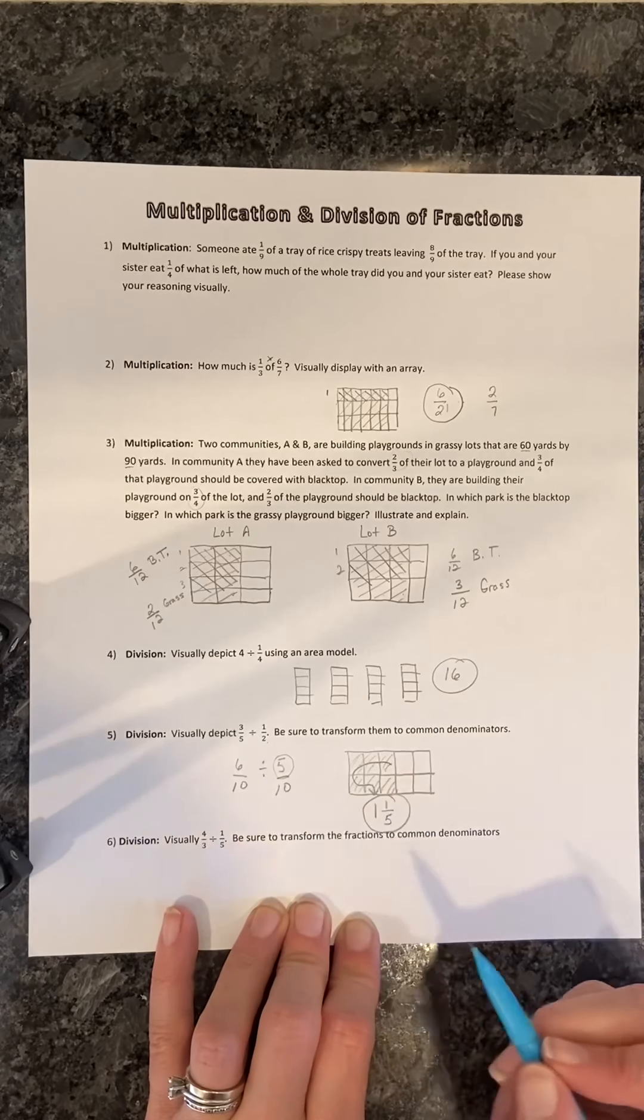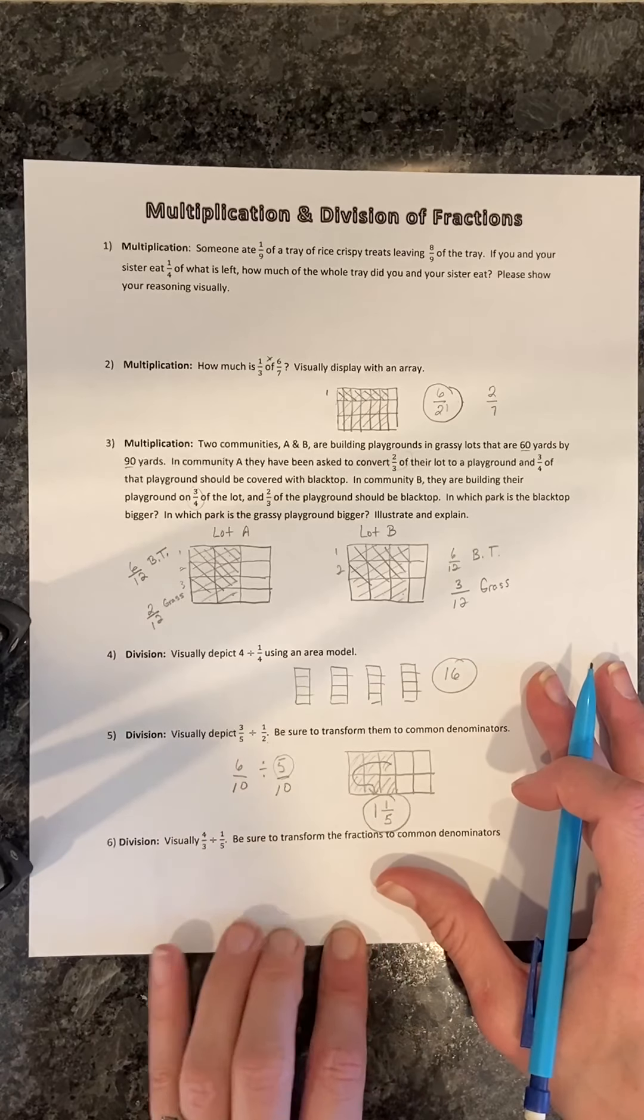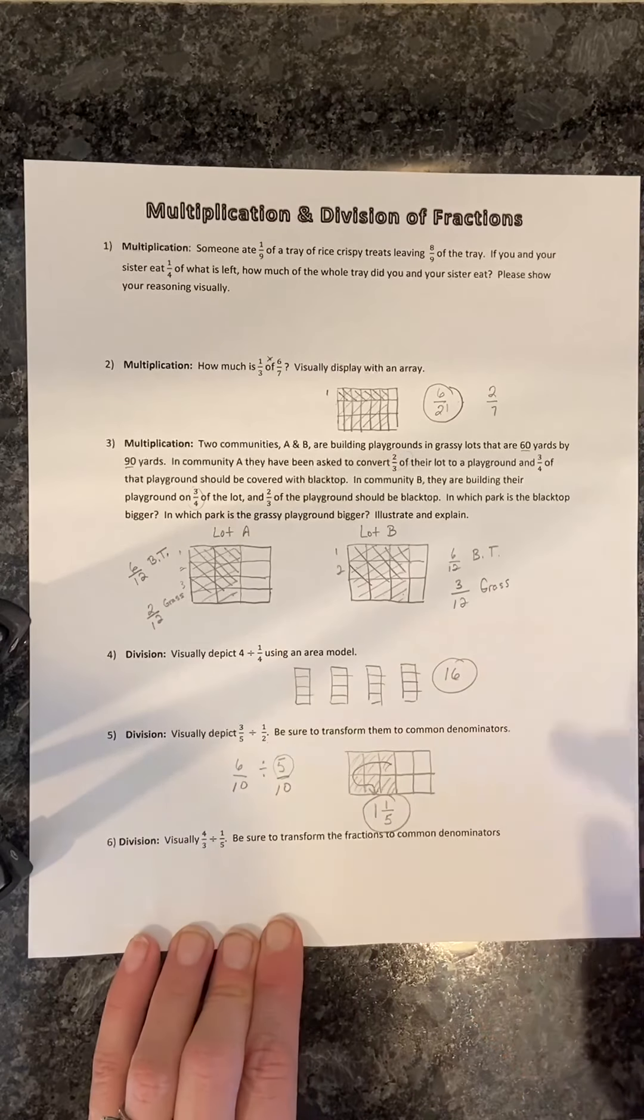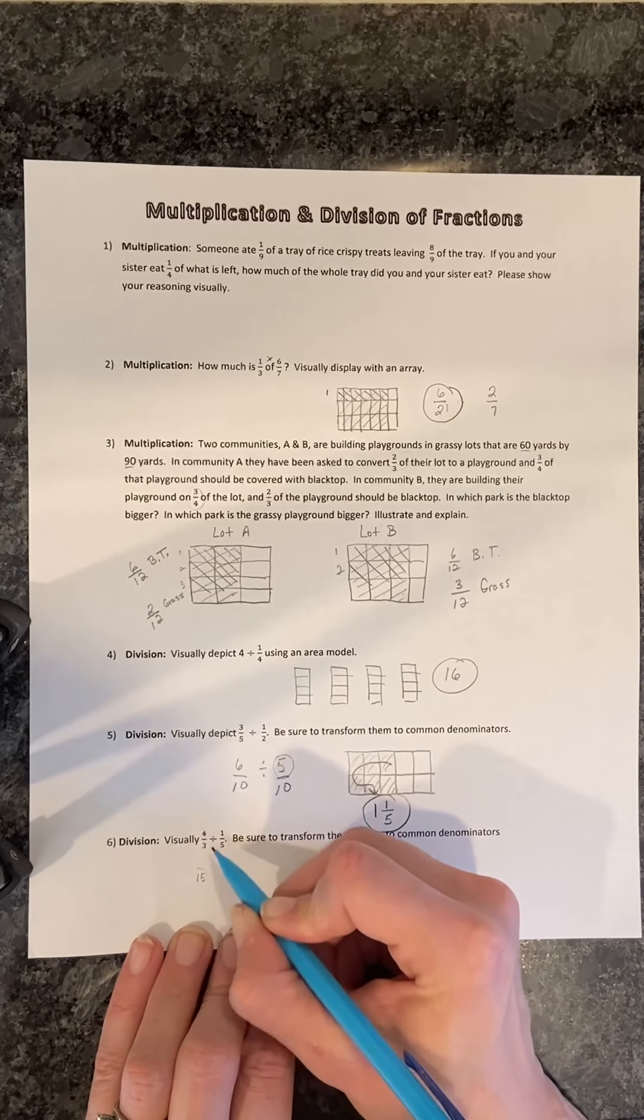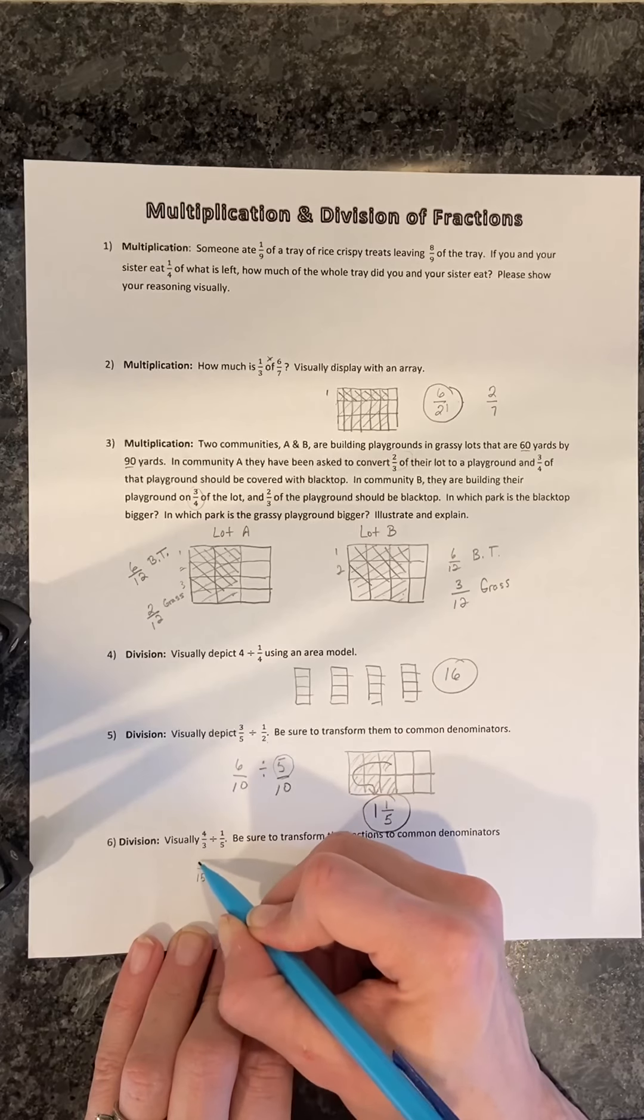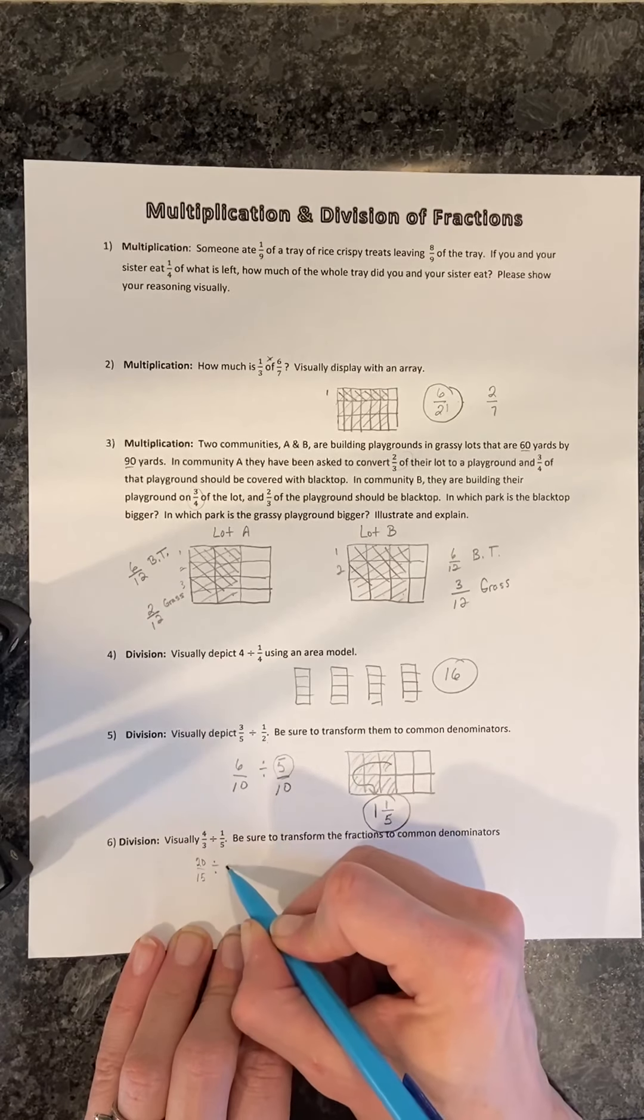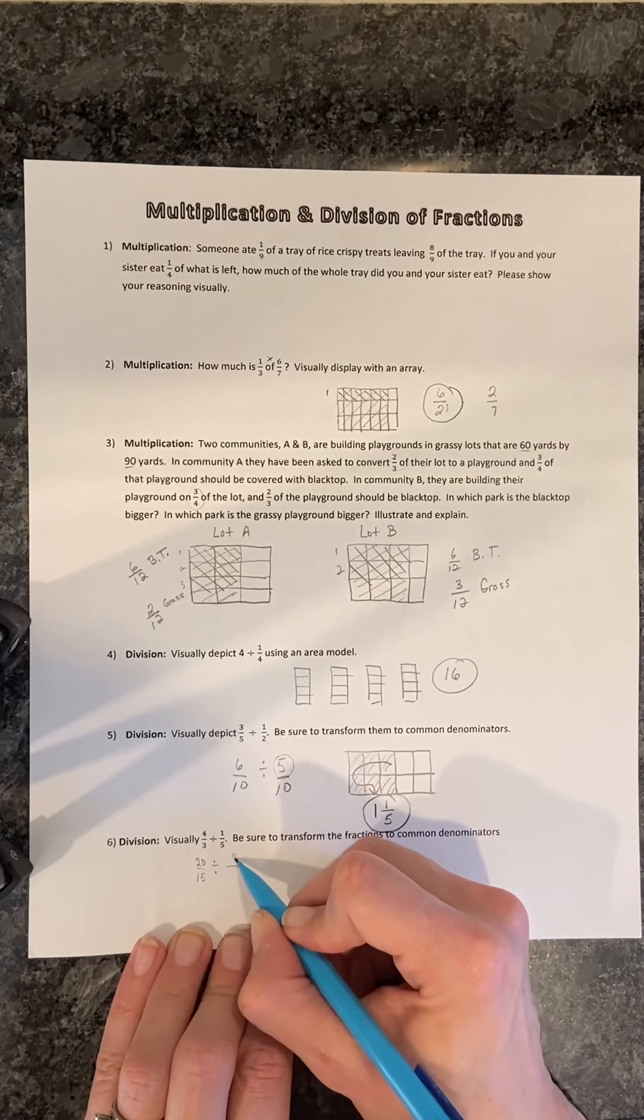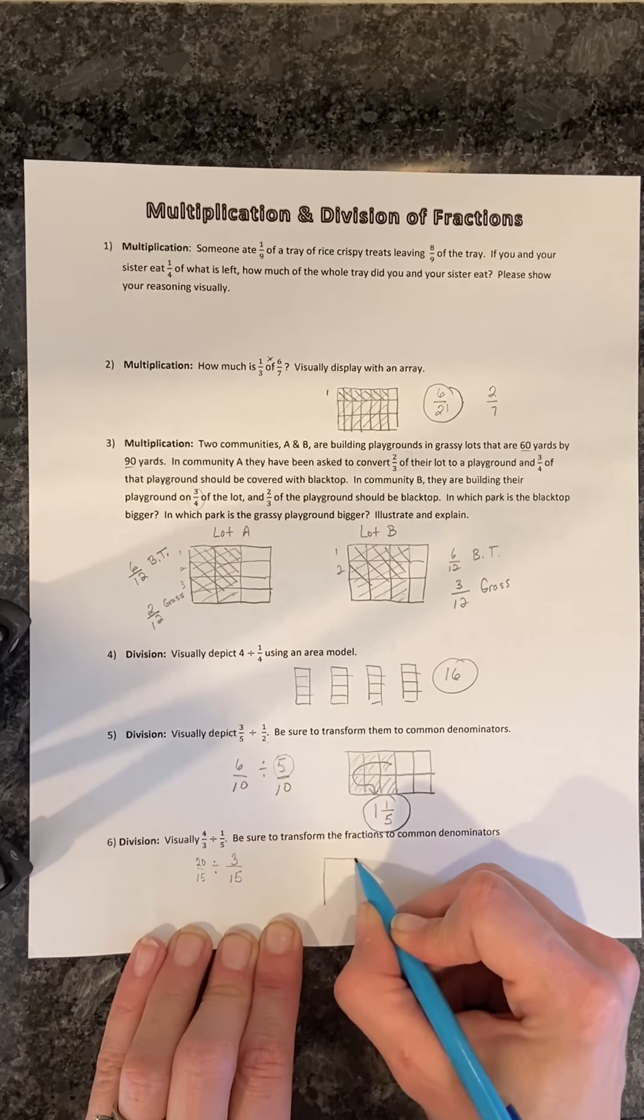Okay, now we want to do four-thirds divided by one-fifth. Again, we need to have common denominators so that we are comparing like units, and we can count in similar units. So the common denominator will be 15, and we will rewrite four-thirds as 20-fifteenths, and the one-fifth we will write as 3-fifteenths.